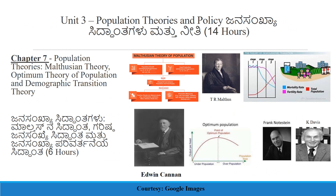Chapter 7 talks about population theories, where we are going to concentrate on Thomas Robert Malthus and the Malthusian theory of population, then Edwin Kennan's Optimum theory, and then Frank N.K. Davies's Demographic Transition theory.